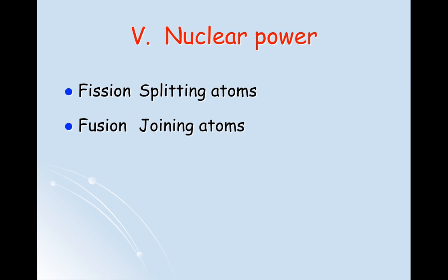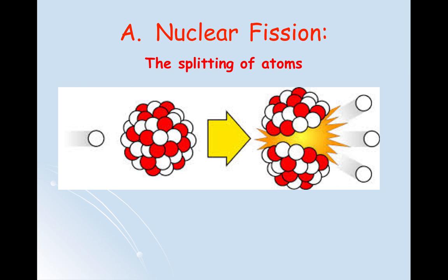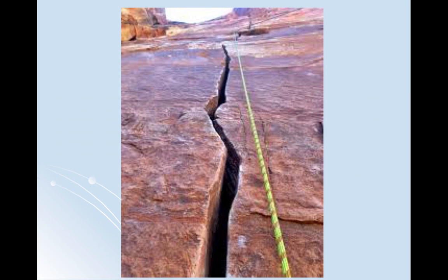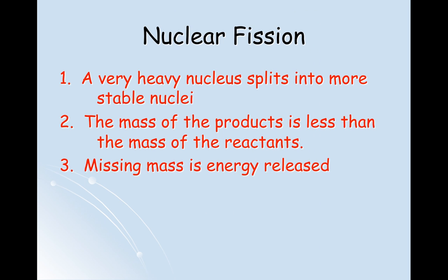Tonight we're going to start by talking about the first type of nuclear change, and that is fission. Capital letter A is nuclear fission, which means the splitting of atoms. The word fission literally means to split in two. I think of fissures in rocks — you can see a giant crack running up a rock and it literally splits it in two. Fission occurs with a very heavy, large nucleus that splits into more stable nuclei.